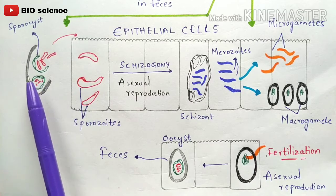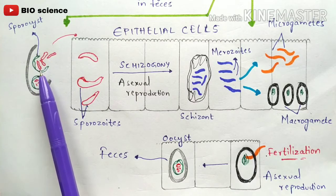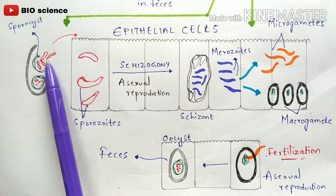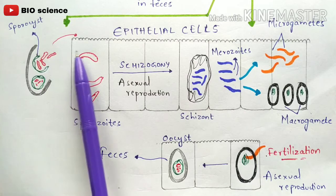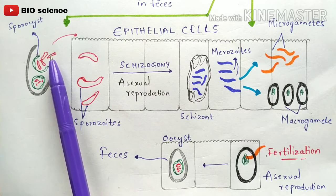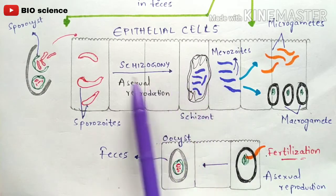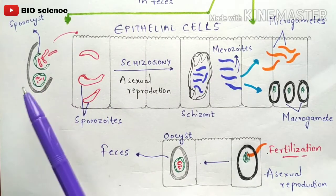Once attached near the epithelial cells, the cyst wall gets ruptured, and along with it the sporocyst wall also ruptures. We know each sporocyst contains four sporozoites. Those sporozoites get released and enter into the epithelial cells of the human digestive system. These sporozoites — released by the rupturing of the sporocysts — now invade the epithelial cells and the actual process begins.